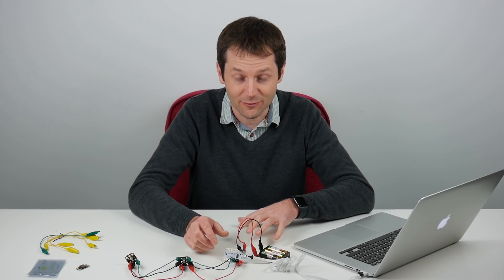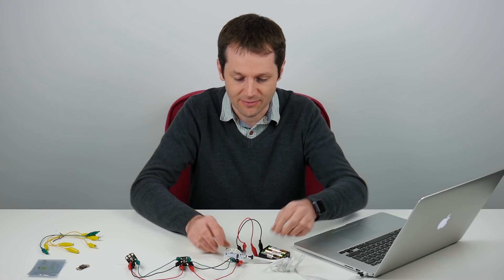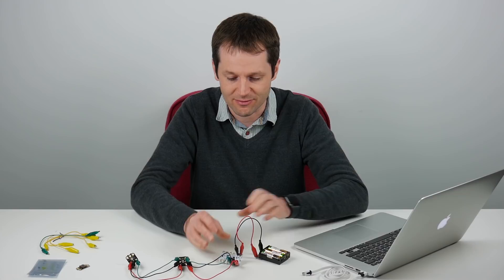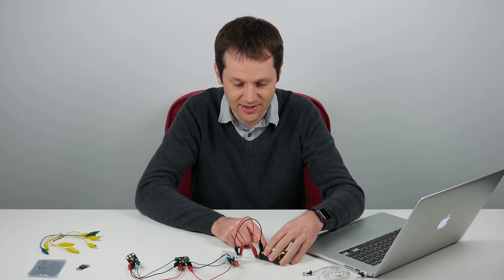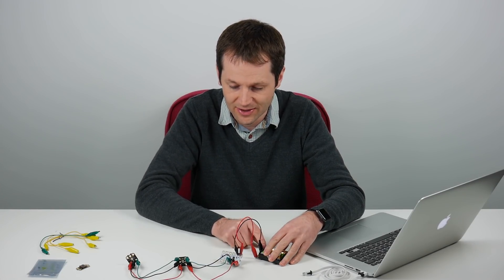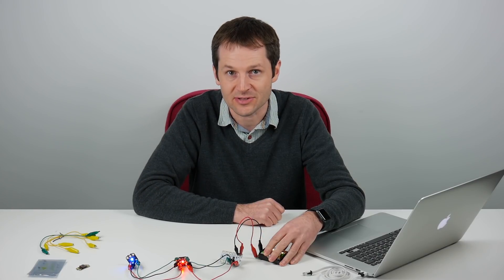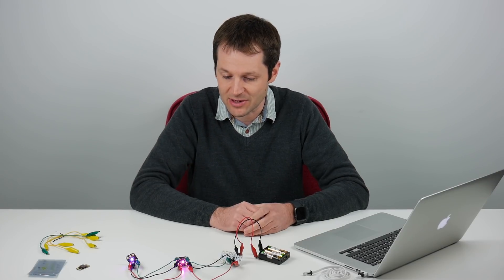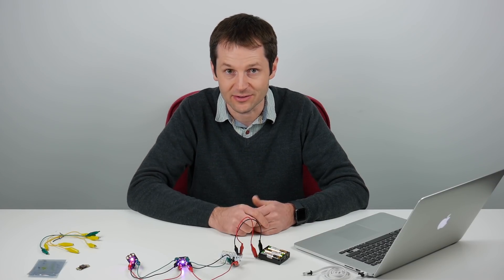Another feature of the crumble is that once it's programmed, you can actually unplug it from the computer. It now has that program in its brain. So if I turn the crumble off and turn it on again, it runs the last program you sent. So if this was embedded in a display or a project, it will continue to run that program whenever the crumble is turned on.